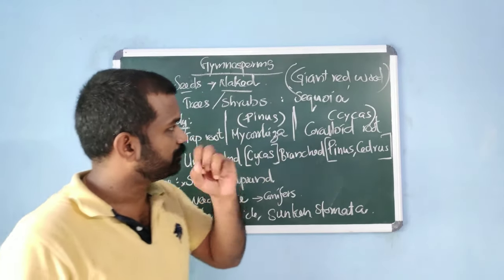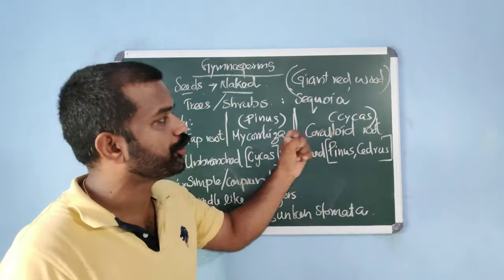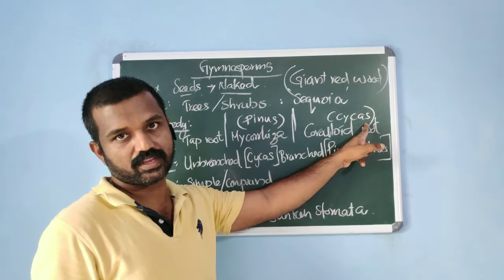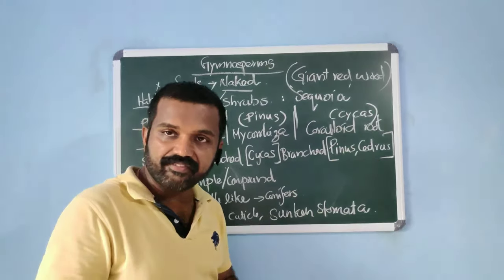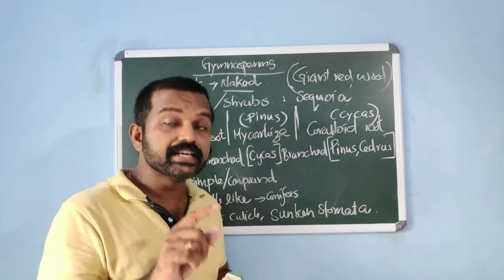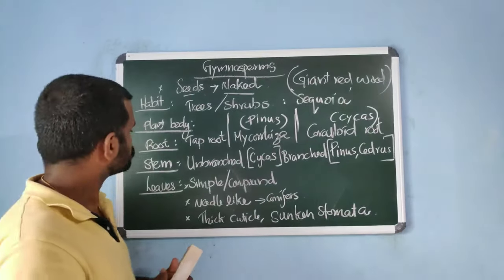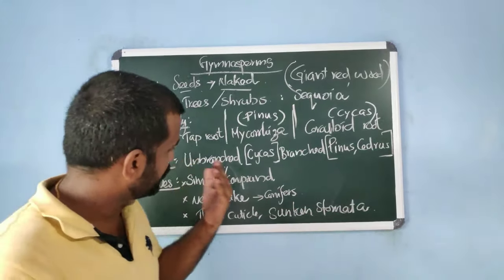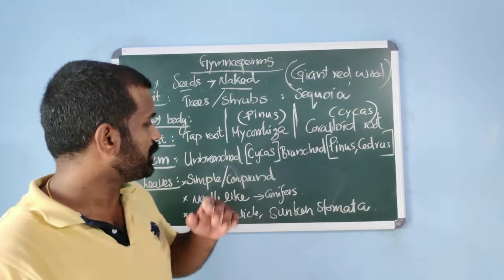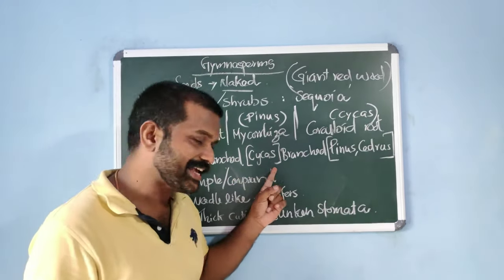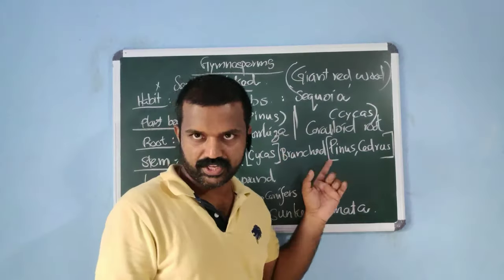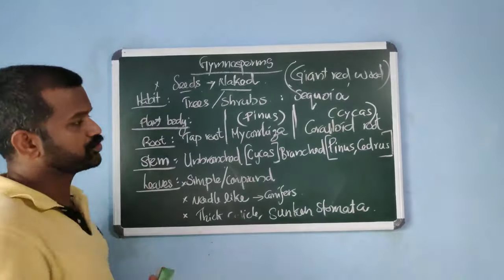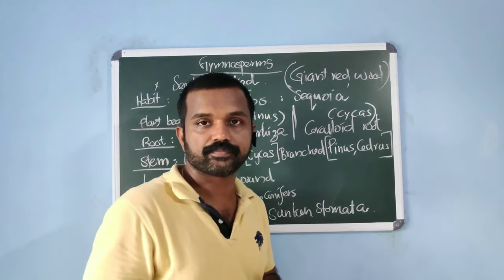Mycorrhiza is seen in pinus. Another speciality is the coraloid root, seen in the gymnosperm cycas. Coraloid roots have nitrogen-fixing symbiotic cyanobacteria. Regarding stem, it can be either branched or unbranched. Unbranched stem is seen in cycas, and branched stem is seen in pinus or cedrus.